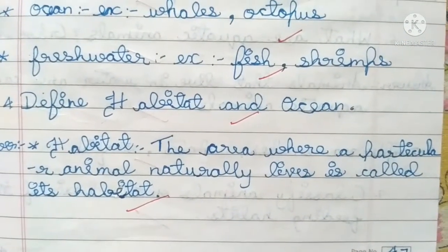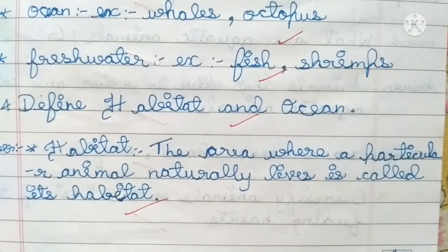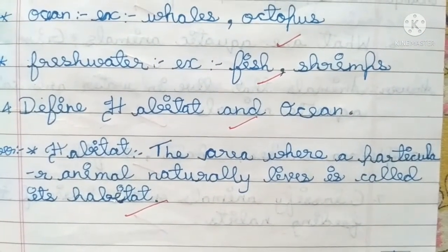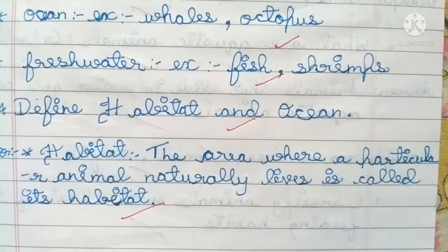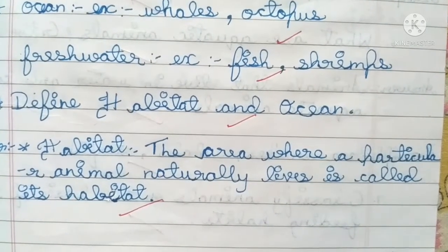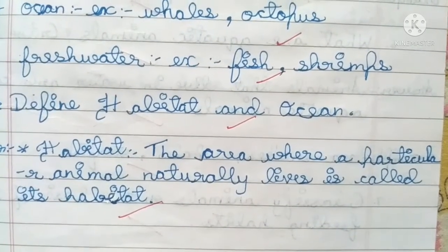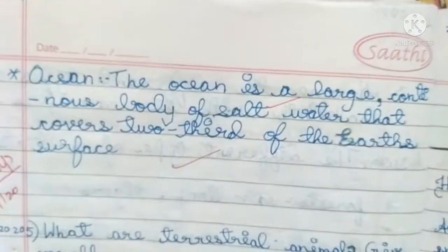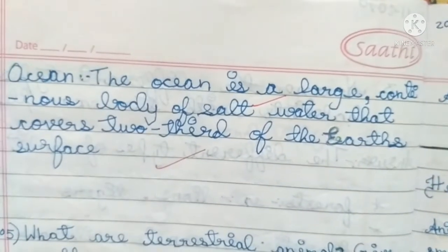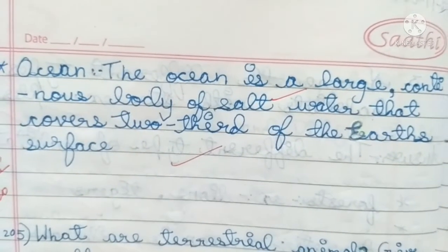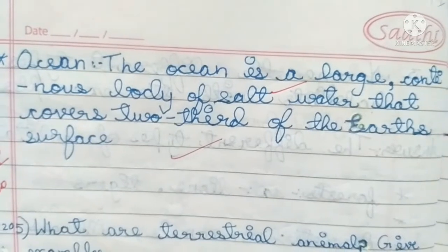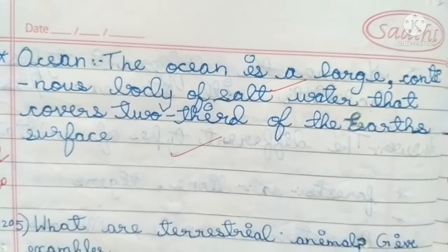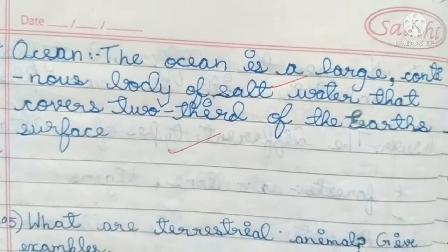Answer: Habitat — the area where a particular animal naturally lives is called its habitat. Ocean — the ocean is a large continuous body of salt water that covers two-thirds of the earth's surface.